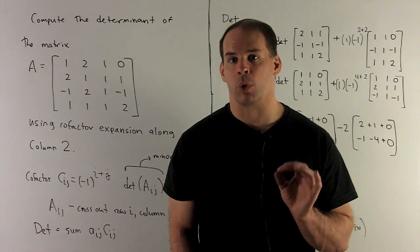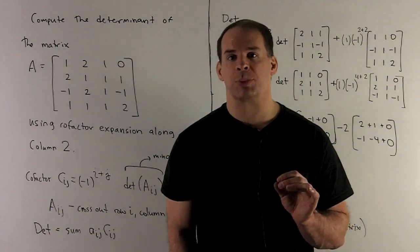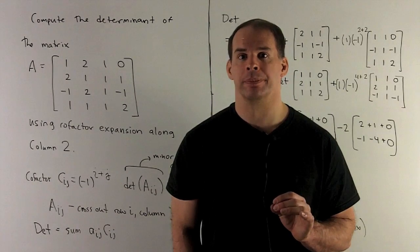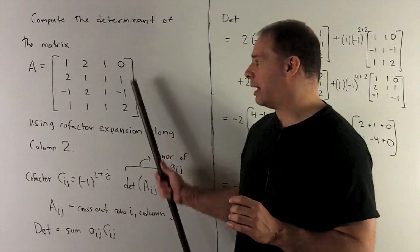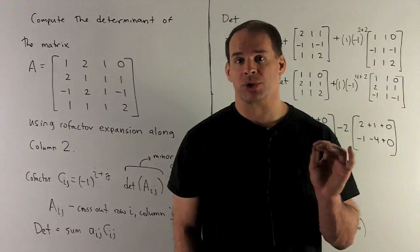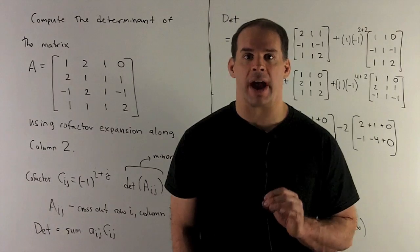Compute the determinant of the following 4 by 4 matrix A by using a cofactor expansion down column 2. In practice, we would use row 1 or column 4 because it has a 0 in it. That will reduce our work a little bit. Here, we just want to get a workout with cofactors.